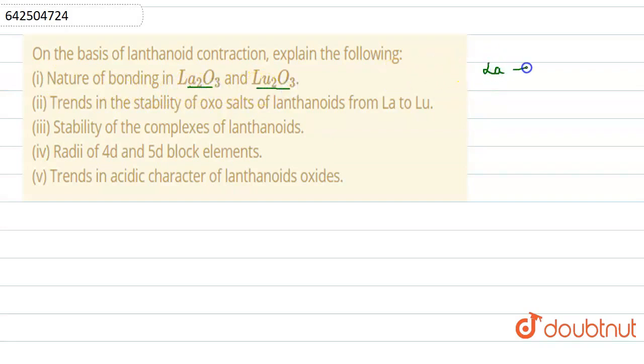As we move from lanthanum to lutetium, size decreases. As size decreases, according to Fajans' rule, because lanthanoid is a cation, smaller is the size of cation, greater is the covalent character. So we can say that as we move from lanthanum to lutetium, covalent character increases.